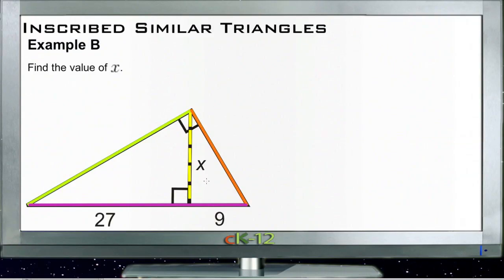Alright, for Example B we're going to do this a little bit differently. Again, we know that all three of our triangles are proportional—they're all similar in size, which means that the shortest side of any triangle, say the smallest triangle here, compared to the medium side...